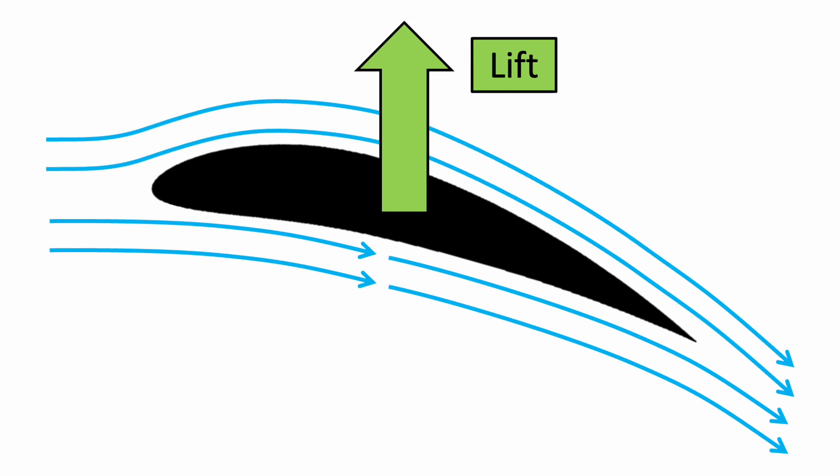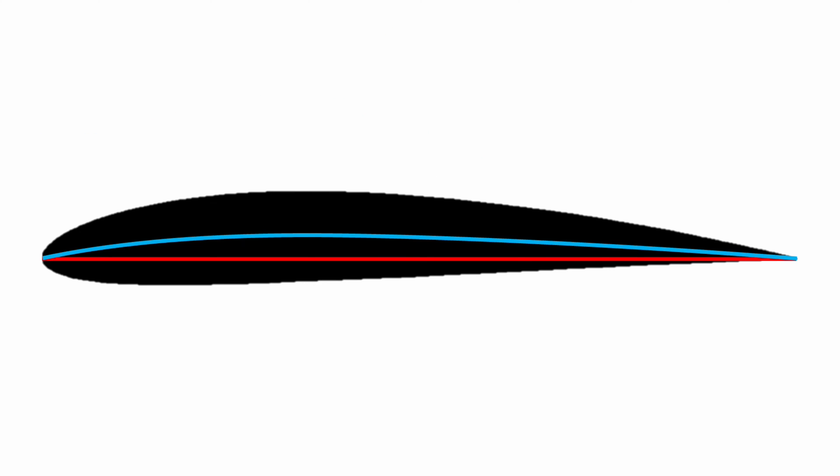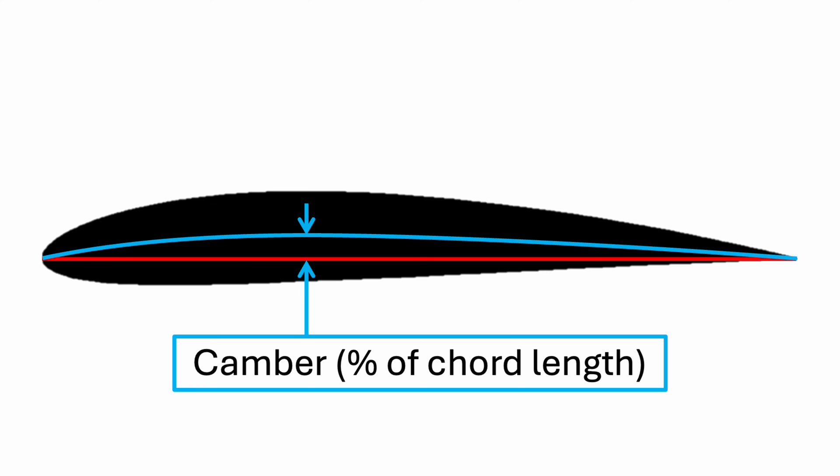Camber is measured by drawing a center line on the airfoil halfway between the top and bottom surfaces. The amount of camber is the maximum distance between the chord line and the center line, and is usually expressed as a percentage of the chord length.